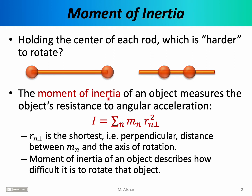The moment of inertia of an object measures the object's resistance to angular acceleration. An object with a large moment of inertia, like the object on the left, would be difficult to rotate because it resists acceleration, whereas an object with a smaller moment of inertia, like the one on the right, would be easier to rotate.